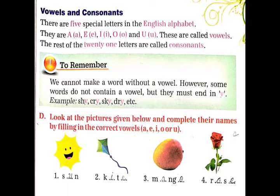Vowels and Consonants. There are five special letters in the English alphabet. English alphabet में five special letters होते हैं. They are A, E, I, O and U. वे A, E, I, O and U हैं. These are called vowels. वे vowels कहलाते हैं.